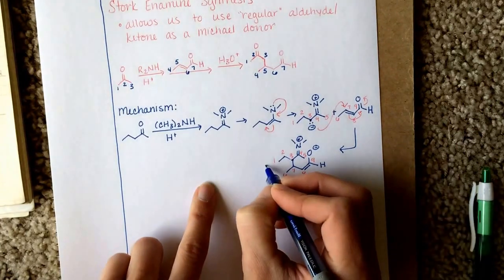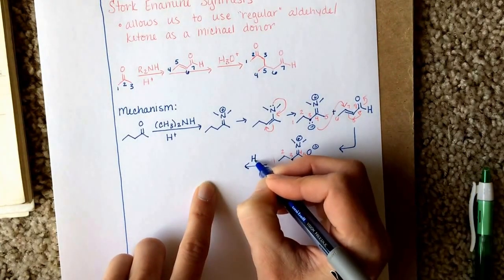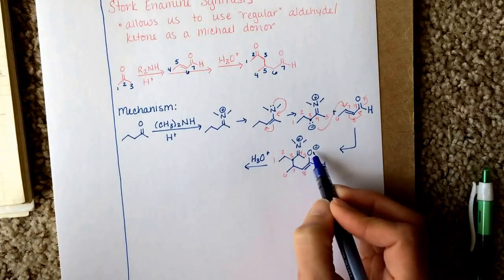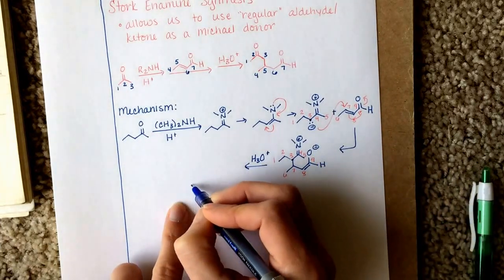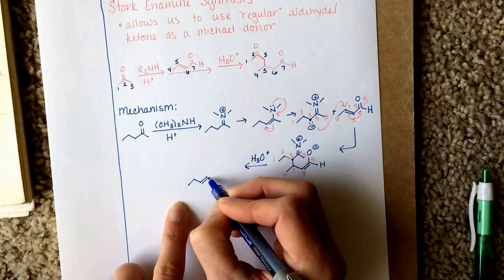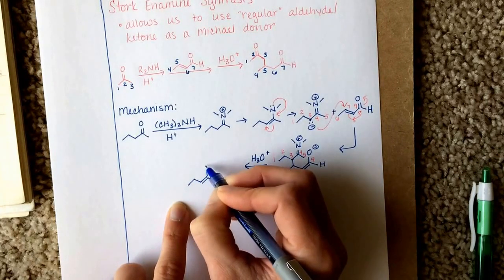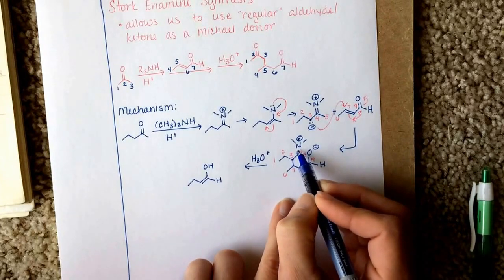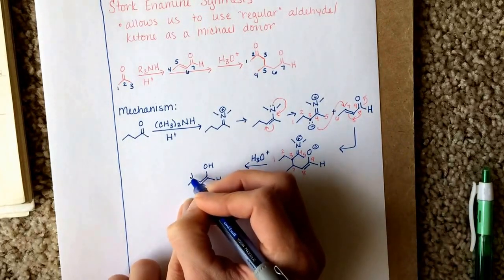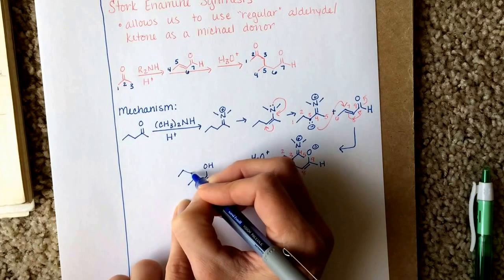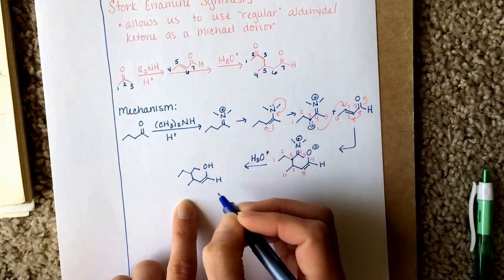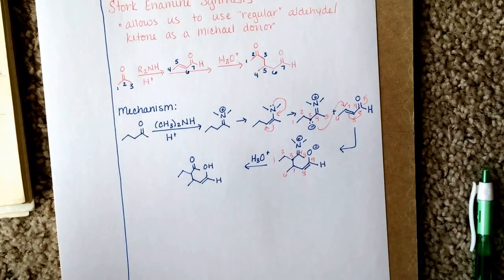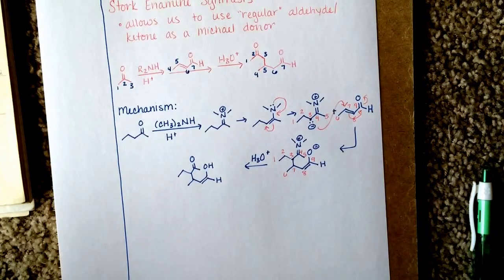We hydrolyze and protonate all at the same time with H3O+. So the H3O+ is going to be protonating the OH group. And the H3O+ is also going to be converting the enamine back into a carbonyl compound. And if you forgot that conversion, that's in the enamine mechanism in Chapter 20.